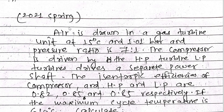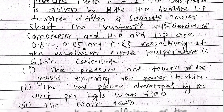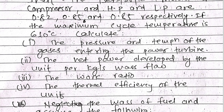Welcome to the numerical series on power plant equipment. This question is from the 2021 spring exam of Pokhla University. Air is drawn into a gas turbine unit at 15 degrees Celsius and 1.01 bar pressure. The pressure ratio is 7.1. The compressor is driven by the HP turbine, and the LP turbine drives a separate power shaft. The isentropic efficiencies of the compressor, HP turbine, and LP turbine are 0.82, 0.85, and 0.85 respectively. The maximum cycle temperature is 610 degrees Celsius. Calculate the pressure and temperature of the gas entering the power turbine.